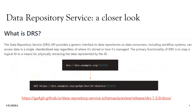DRS stands for Data Repository Service. The canonical definition: the DRS API provides a generic interface to data repositories so that consumers, including workflow systems, can access data in a single standardized way regardless of where it's stored or how it's managed. The primary functionality of DRS is to map a logical ID to a means for physically retrieving the data represented by that ID. A DRS URI has the format: DRS, colon, slash, slash, the domain of the server, and then the ID — which can be numeric or alphanumeric.